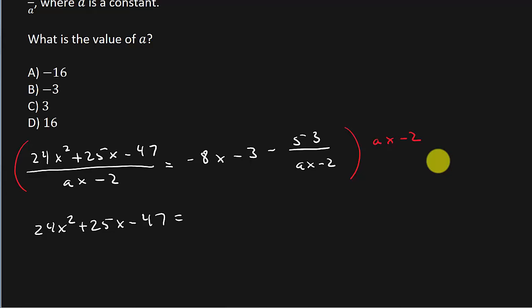Or you could just look at it as negative 8x minus 3 times ax minus 2. You could foil the two. And then when I multiply it to this one they're going to cancel out and we're left with just minus 53.